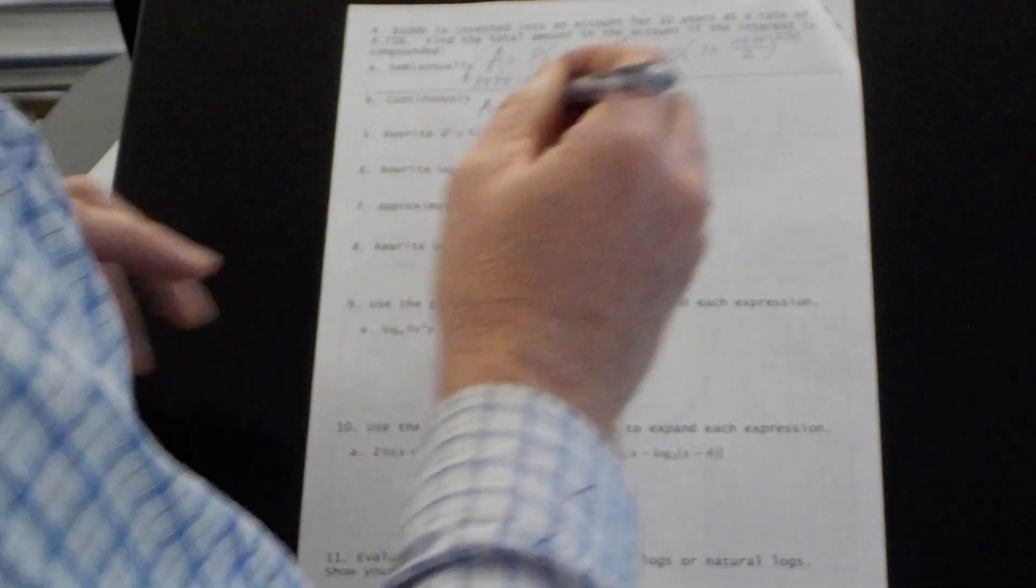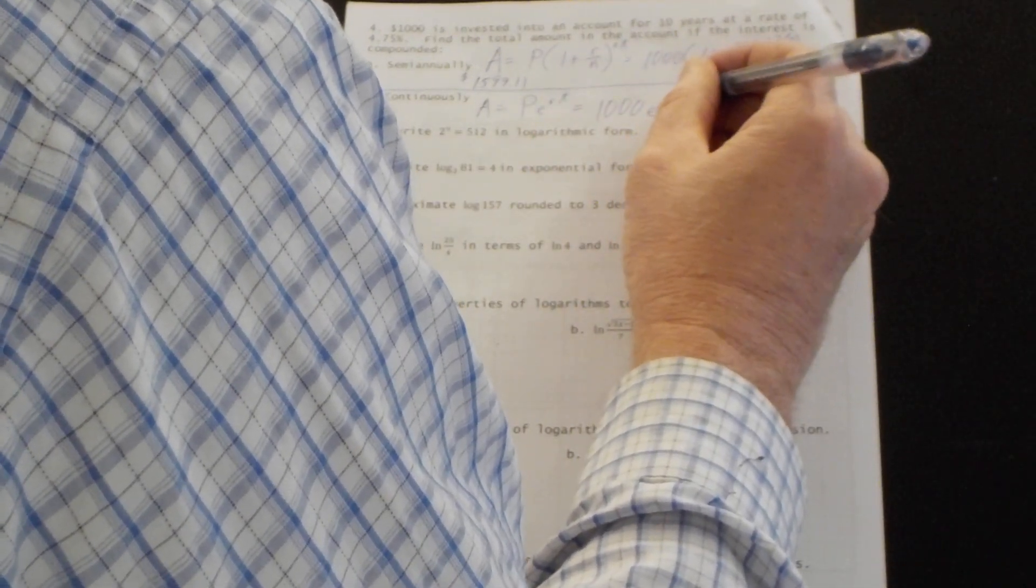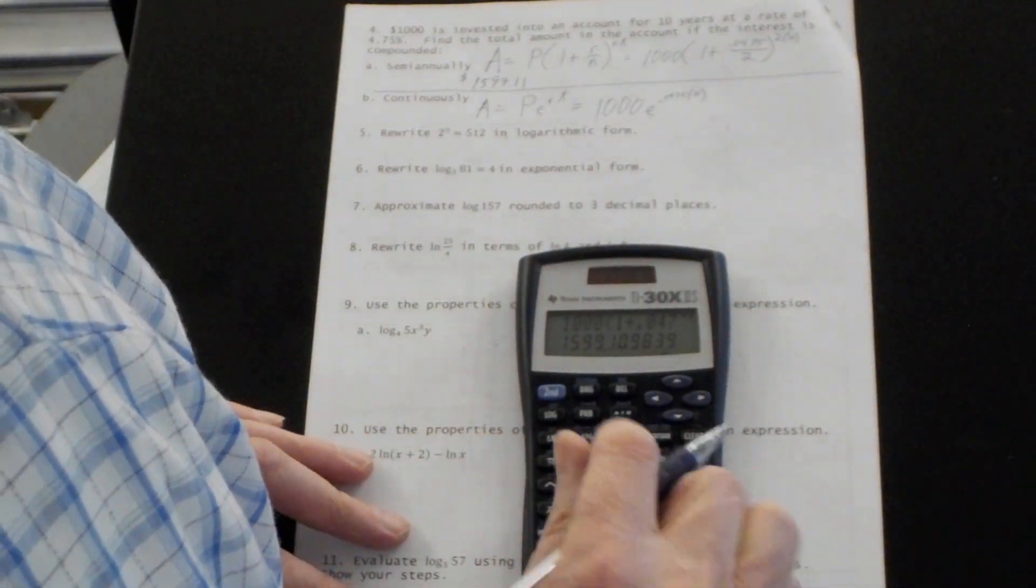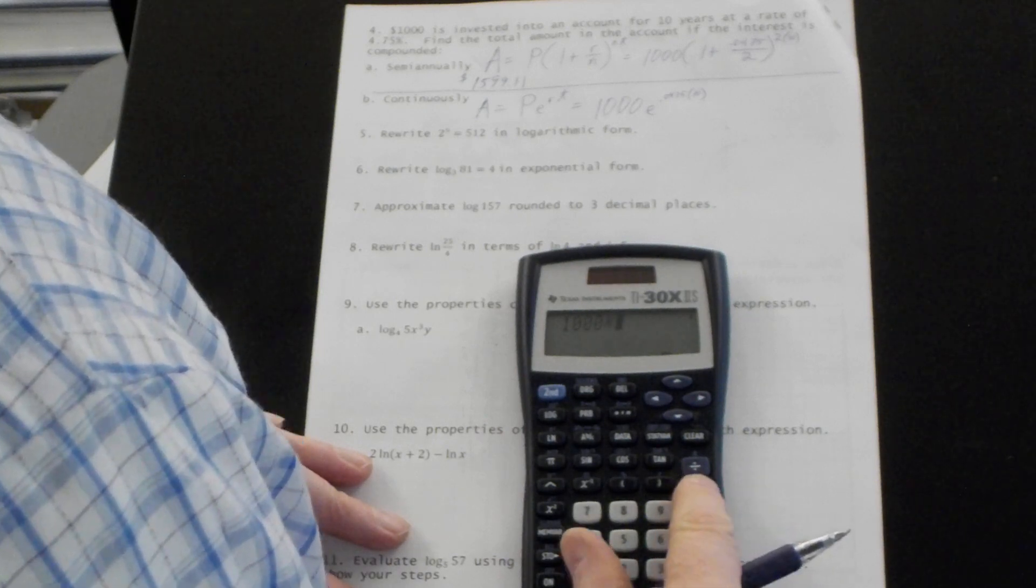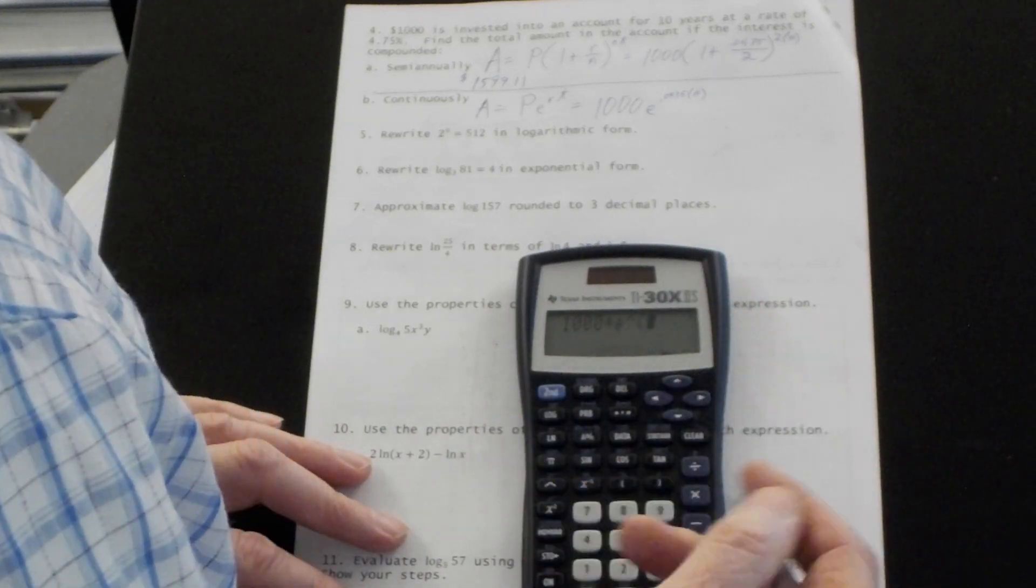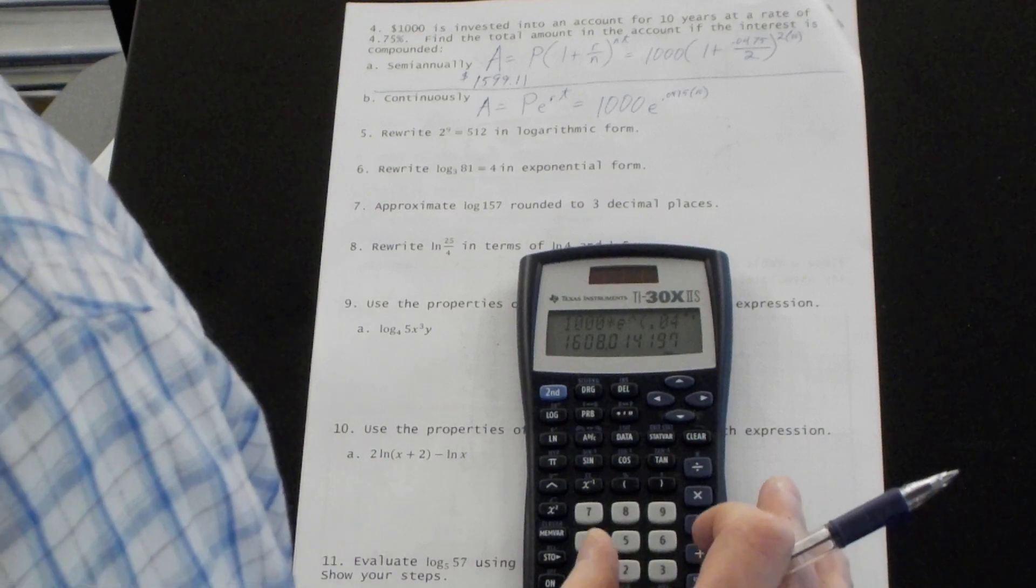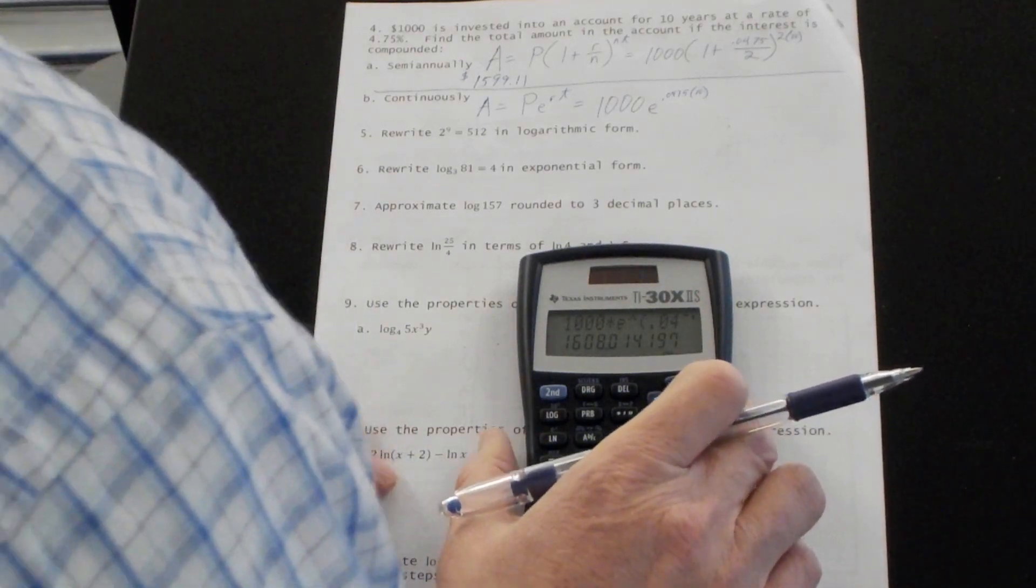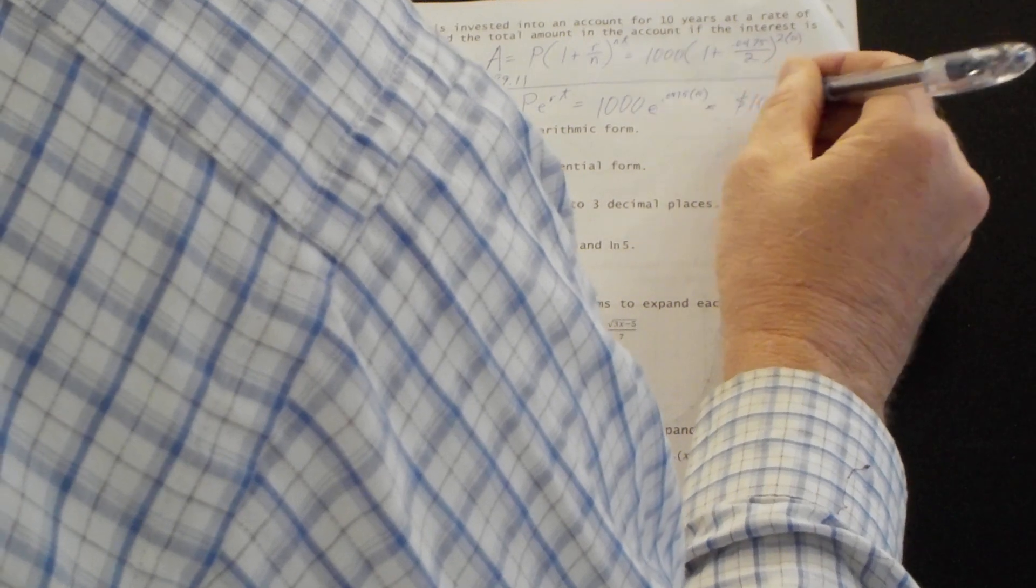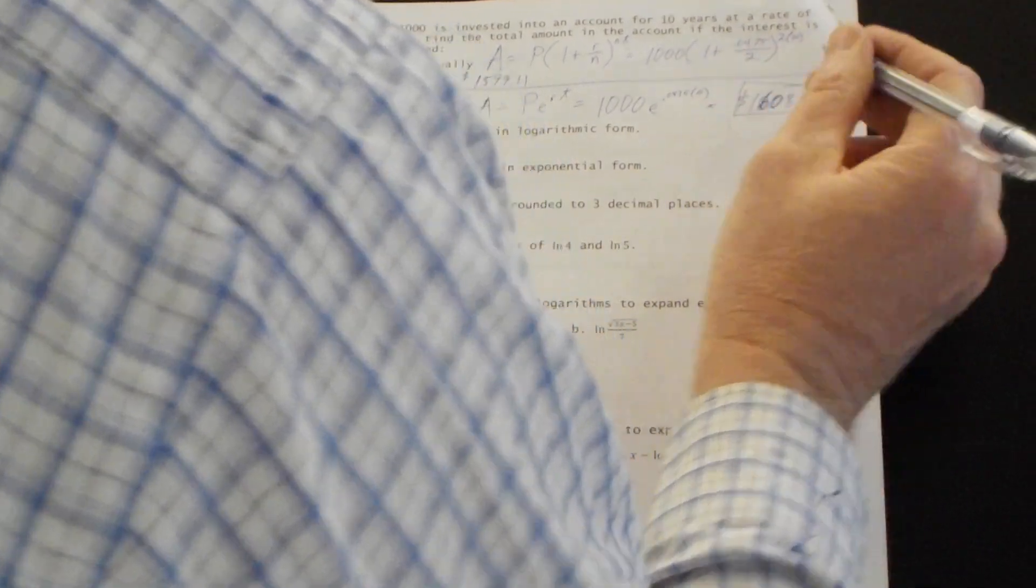If we compound continuously, we use A equals P times e to the r t. And P is 1,000 times e to the r, which is 0.0475 times t, which is 10. And then we go 1,000 times, now, second LN will get us that e to the power. And that's 0.0475 times 10 is what I'm going to put there for the power. And that gives me about $8 more, $1,608.01.